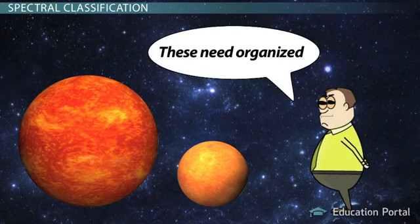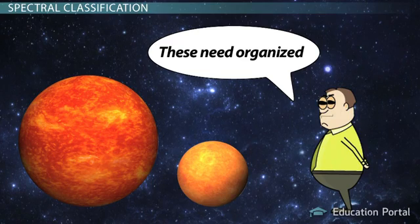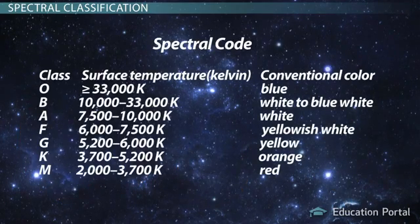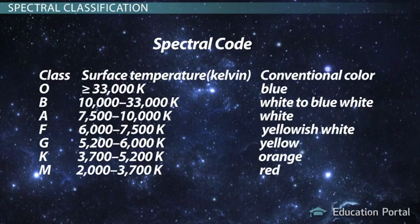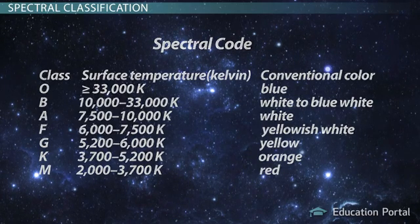Scientists like to organize and classify things. They developed a classification system called the Spectral Code, and have used it since 1943. To those who can read it, the Spectral Code tells just what kind of an object a star really is.